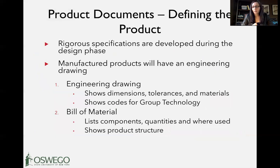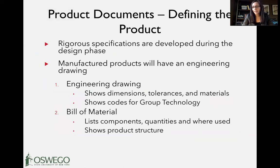A few key product documents to be familiar with as we define the product and move into production: an engineering drawing shows dimensions, tolerances, materials, and codes for group technology. If you can use standard parts or get multiple parts from the same supplier, that brings the price point down and makes manufacturing and disassembly easier. We also have the bill of materials, which lists all components, quantities, and where each is used in the product. These two — engineering drawings and bill of materials — are essential to move into the manufacturing phase.